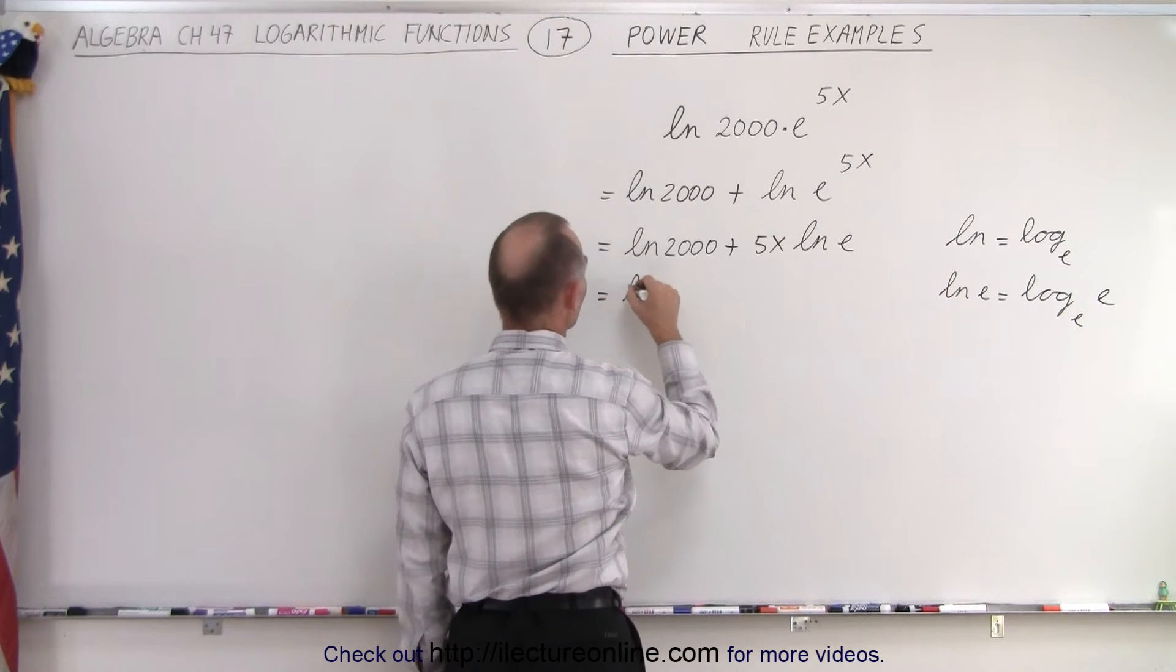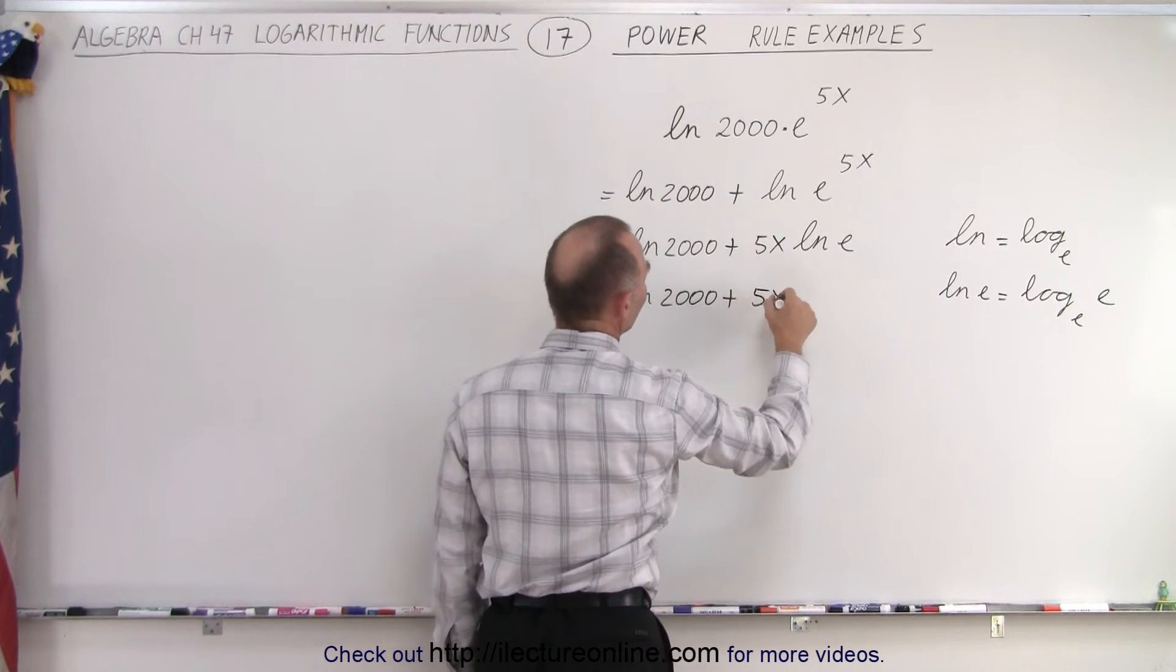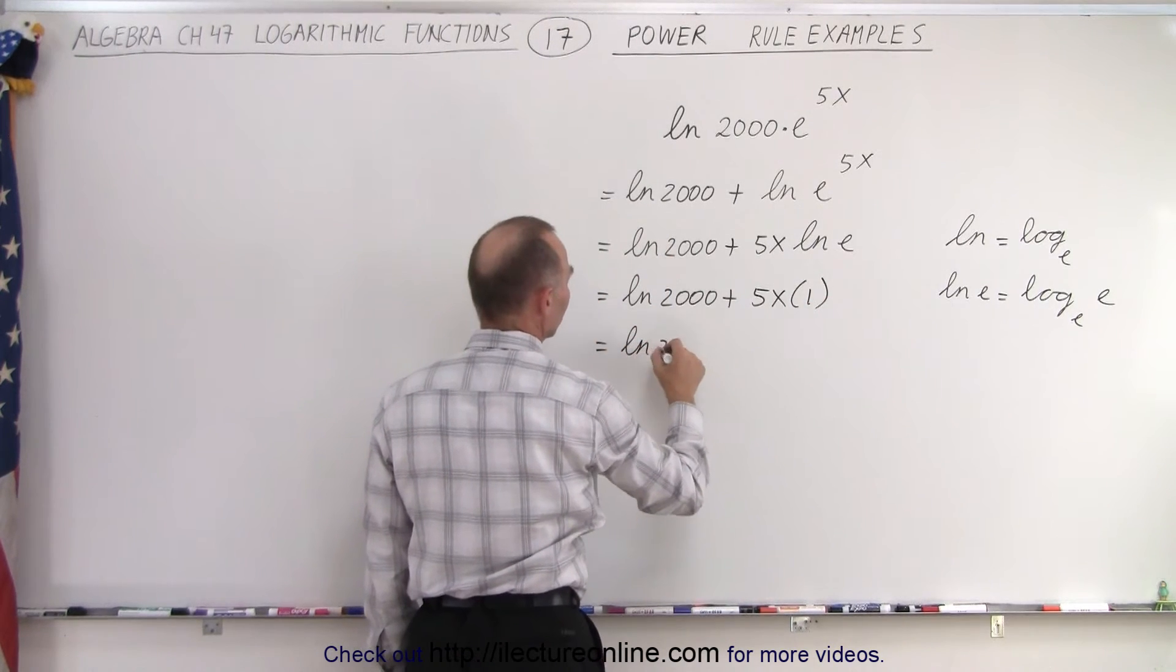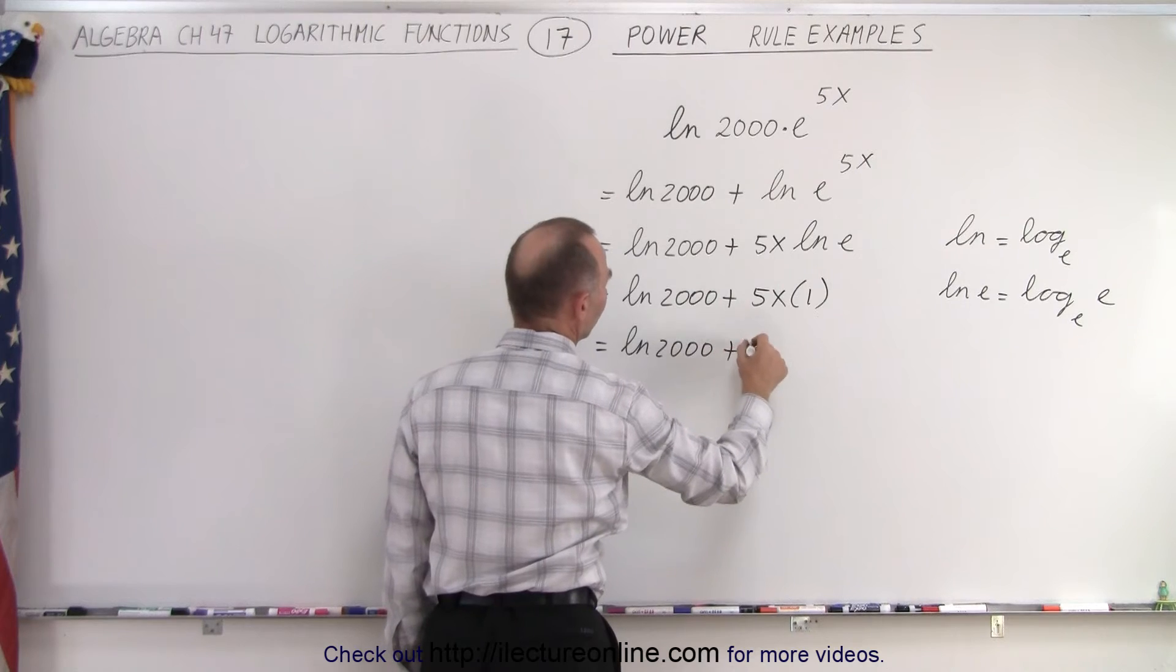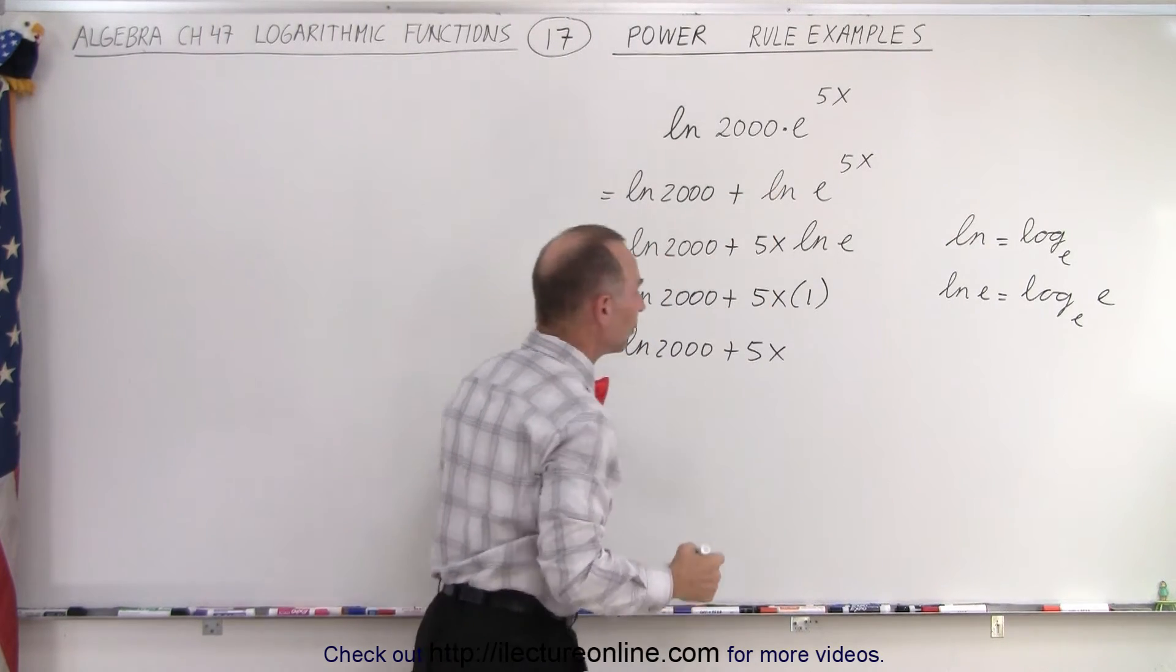So that means that this is equal to the natural log of 2,000 plus 5x times 1. So simply this becomes the natural log of 2,000 plus 5x. And that's a simplified form from our original problem.